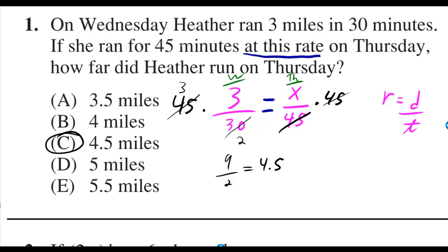It says that she ran for 45 minutes at this rate on Thursday. That tells you that the two rates are equal. So that's why we got the equal sign right there.